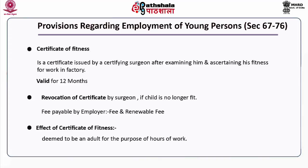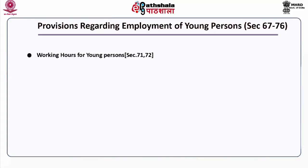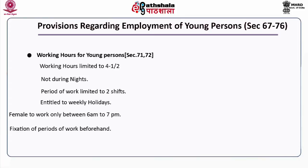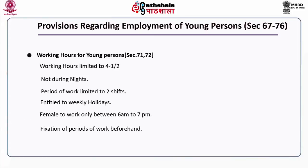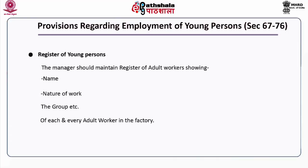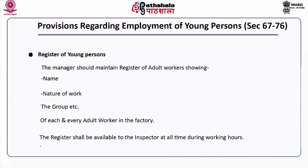Effect of certificate of fitness granted to an adolescent: if a certificate of fitness has been granted to an adolescent, he will be deemed to be an adult for the purpose of hours of work. Working hours for young persons under Sections 71 and 72: working hours are limited to 4 and a half hours; no night work; work limited to two shifts only; entitled to weekly holidays; female young persons may work only between 6 am and 7 pm; and periods of work must be fixed beforehand. The manager should maintain a register of young persons, and the register shall be available to the inspector at all times during working hours.